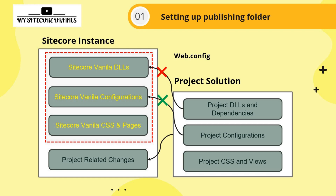Another thing is web.config and global.asax. If you are using Helix, there might be multiple projects in your solution, each with a web.config — which might be blank. If you override your web.config or global.asax with the Sitecore instance's configuration, your Sitecore instance may not work. So you should not override web.config and global.asax. If you do need to customize global.asax, make sure to include whatever the current Sitecore instance is handling.